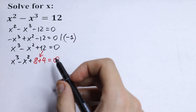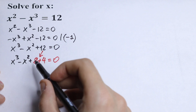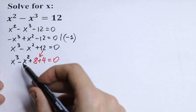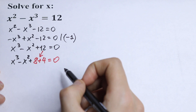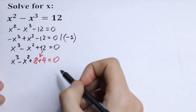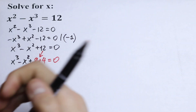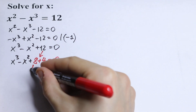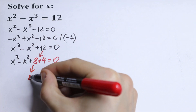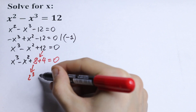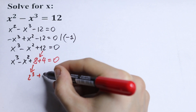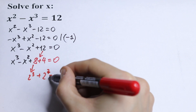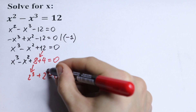So we can group this — we can group x cubed with 2 cubed, and x squared with 2 squared. So I write this 8 as 2 cubed and this 4 as 2 squared, equal to 0.